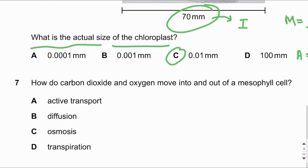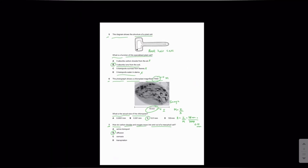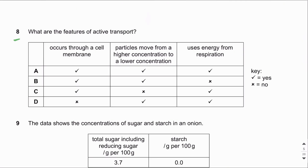MCQ number seven: How do carbon dioxide and oxygen move into and out of the mesophyll cell? Carbon dioxide and oxygen are gases which simply diffuse into and out of the mesophyll cells. The answer is B.